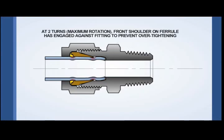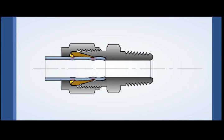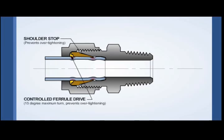At two full turns, the shoulder on the front ferrule will engage the fitting body to prevent over-tightening. With GyroLock, this shoulder stop plus the controlled 15-degree rotation of the rear ferrule avoids the issues associated with the most common mode of fitting failure: over-tightening.